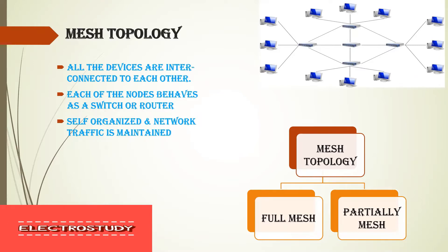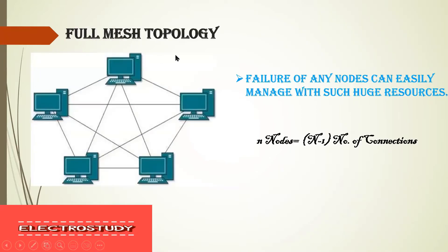Mesh topology is divided into two types: full mesh and partial mesh. In full mesh topology, from the diagram you can see that there are five nodes — five devices connected together through links. One main formula to remember for mesh topology is: for n nodes, each node has n minus one connections.